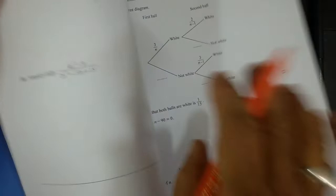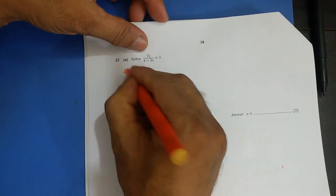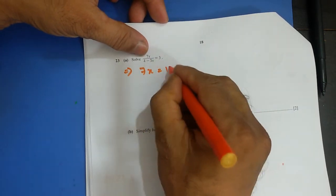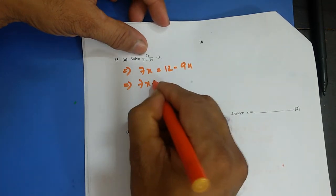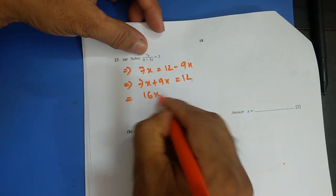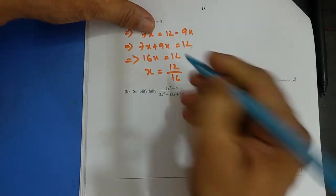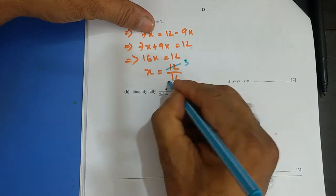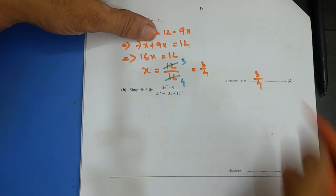Next: solve the equation. Taking 7x to one side: 3 × 4 = 12, minus 3 gives 9x. Bringing terms together: 7x + 9x = 12, so 16x = 12, therefore x = 12/16 = 3/4.